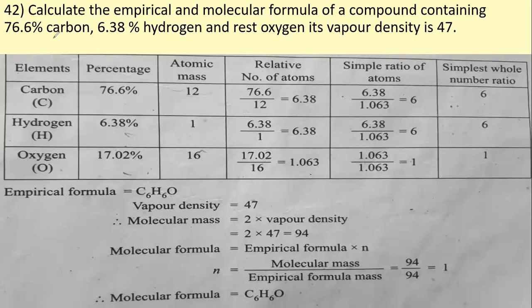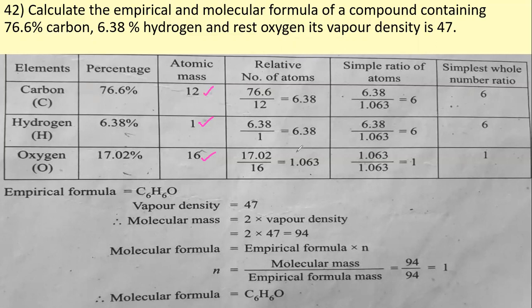So here: carbon has atomic mass 12, hydrogen is 1, and oxygen is 16. The relative number of atoms is calculated by percentage divided by atomic mass. We calculate this individually for carbon, hydrogen, and oxygen.